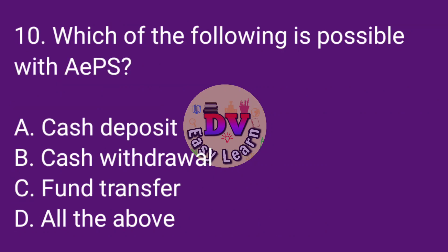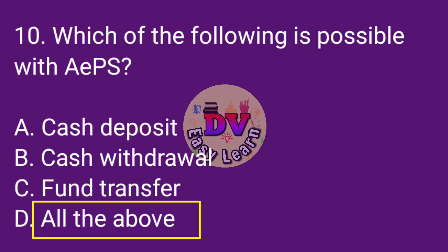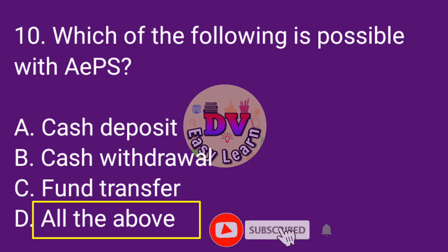Question number 10: Which of the following is possible with AEPS? Correct answer: all the above — cash deposit, cash withdrawal, and fund transfer.